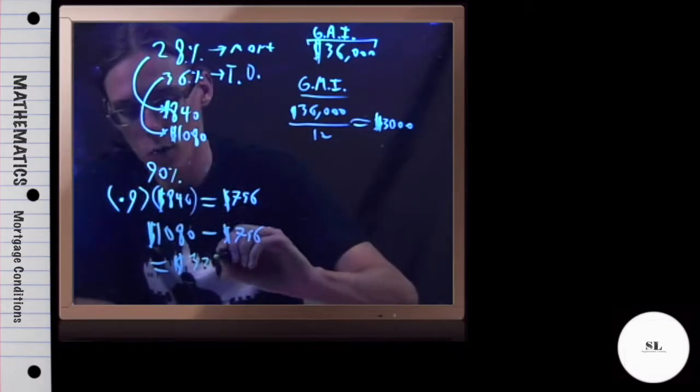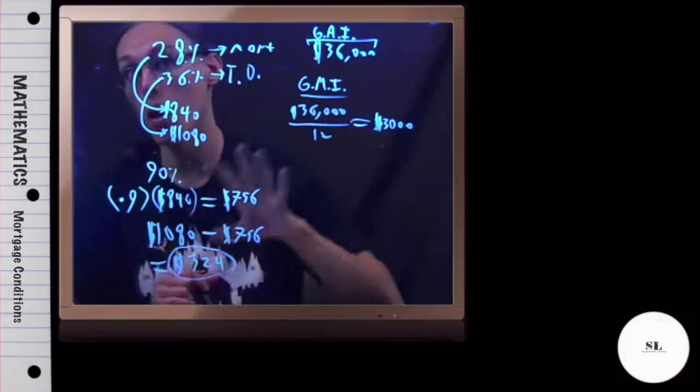So I'm going to take this percentage of 90% and write it as a decimal, take two hops to the left, and we get .9.